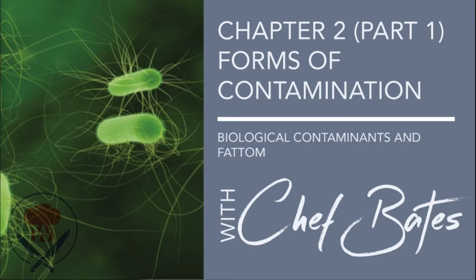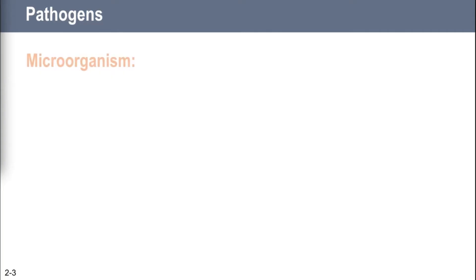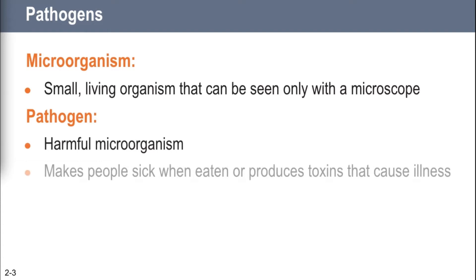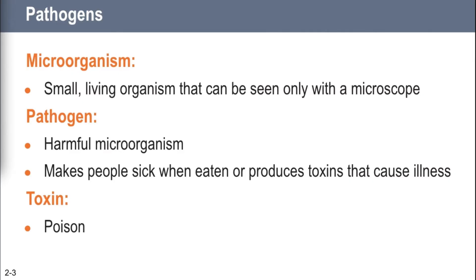Three terms you need to know: microorganism, pathogen, and toxin. A microorganism is a tiny living thing that can only be seen with a microscope. If that tiny living thing gets into your food and makes you sick, it's called a pathogen. If it gets into your food and creates a poison, it can also be called a pathogen, and that poison it's producing is called a toxin.